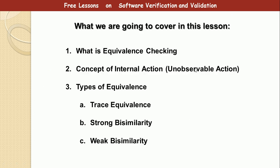In this lesson we are going to cover these topics. First, we are going to look at what equivalence checking is. Then we are going to discuss the concept of internal actions or unobservable actions. Then we discuss the three types of equivalence: trace equivalence, strong bisimulation equivalence, and weak bisimulation equivalence. So let's get started.